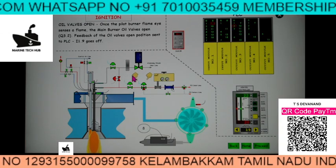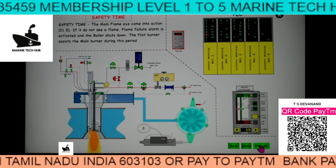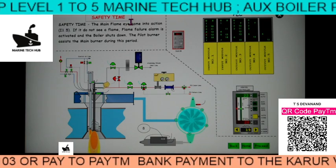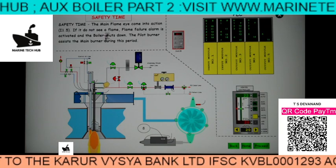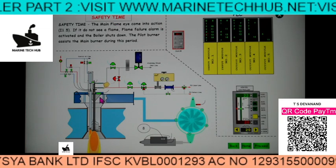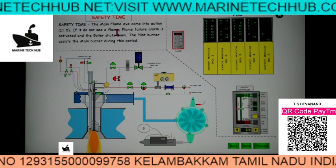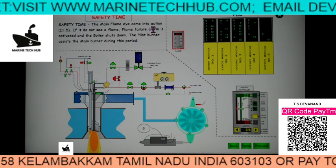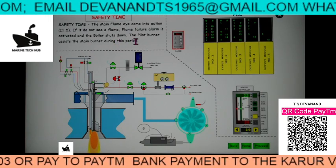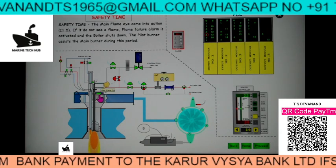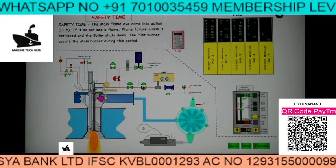Once you stop, the steam purge valve will open and push any remaining oil through. After this, there is the safety time. During safety time the system checks whether the main burner is working correctly, and later the pilot burner will be switched off. The main flame eye — at 1.5 — comes into action. If the flame sensor is not sensing the flame, the flame failure alarm will be activated and the boiler will shut down. The pilot burner assists the main burner during this period. If the sensor is faulty, there will also be a shutdown even if the flame is present.